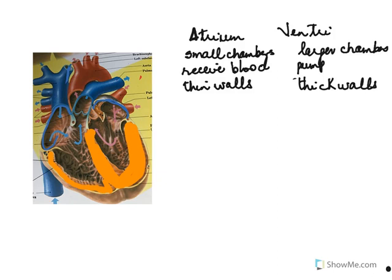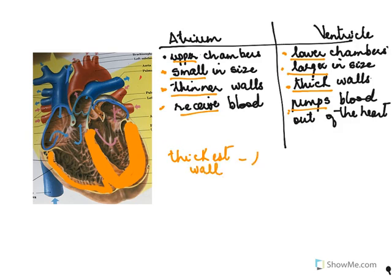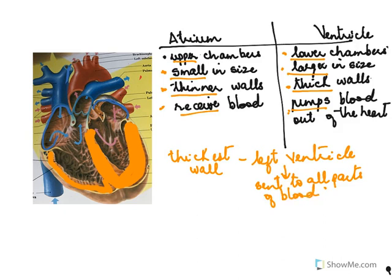To summarize the differences: the atria are the upper chambers, small in size, with thin walls, and they receive blood. The ventricles are the lower chambers, larger in size, with thick walls, and they pump blood out. Among the ventricles, the left ventricle has the thickest wall because it needs to send blood to all parts of the body, requiring very high pressure.